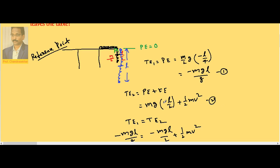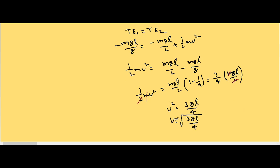So potential is mg into minus l by 2, because total length is hanging, plus half mv². Substitution gives us velocity root 3gl by 4, and l is given as 2 meters.